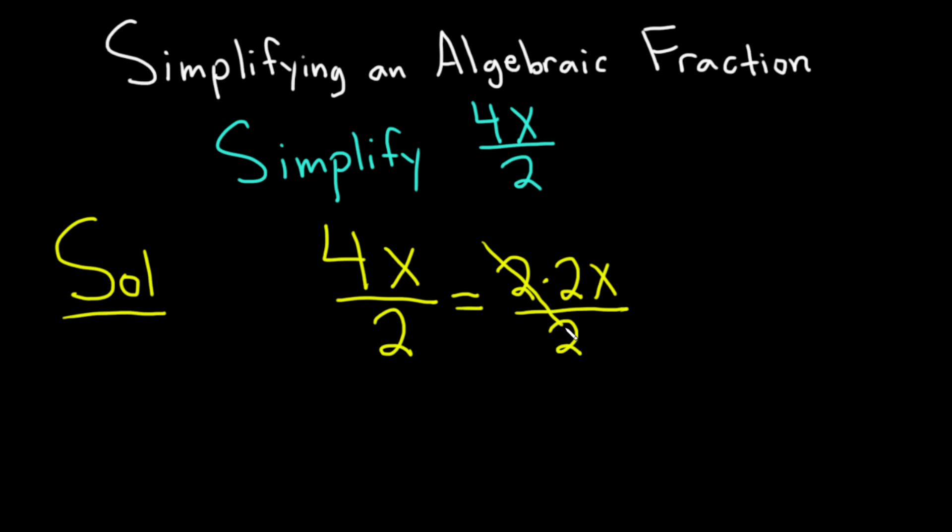And now you can cancel the 2s. So we're just left with 2x over 1, which is just 2x. Boom.